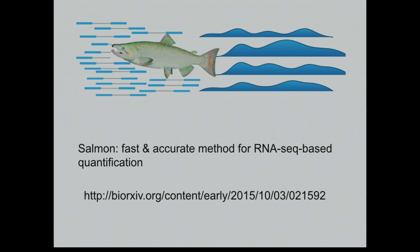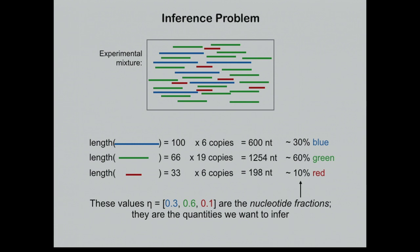What we're trying to do is solve this inference problem. In reality, we have some experimental mixture — a set of transcripts that exist in some relative abundances that we don't know. For example, if we have six copies of the blue transcript with length 100, that's 600 nucleotides. We can talk about the percentage of nucleotides present in the experimental sample — the nucleotide fraction — which in this case is 0.3, 0.6, and 0.1. These are the quantities we want to infer from the short reads.